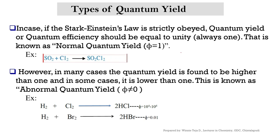In the previous video, we discussed the laws of photochemistry. If the Stark–Einstein law is strictly obeyed for photochemical reactions, then the quantum yield or quantum efficiency of all photochemical reactions is equal to 1, that is unity. Such quantum yields are considered as normal quantum yields. For example, SO₂ + Cl₂ → SO₂Cl₂ falls under the normal quantum yield category.